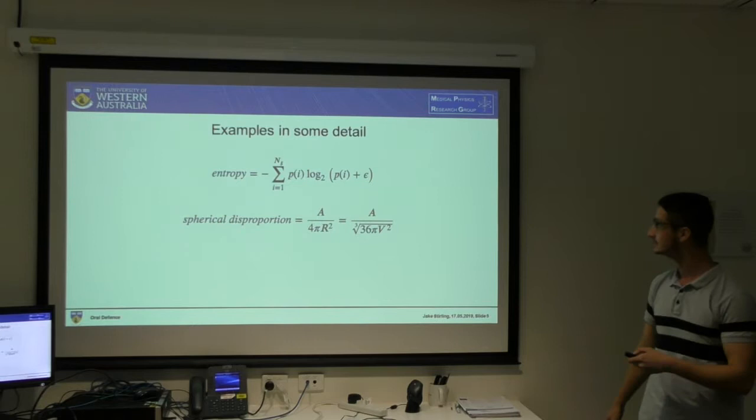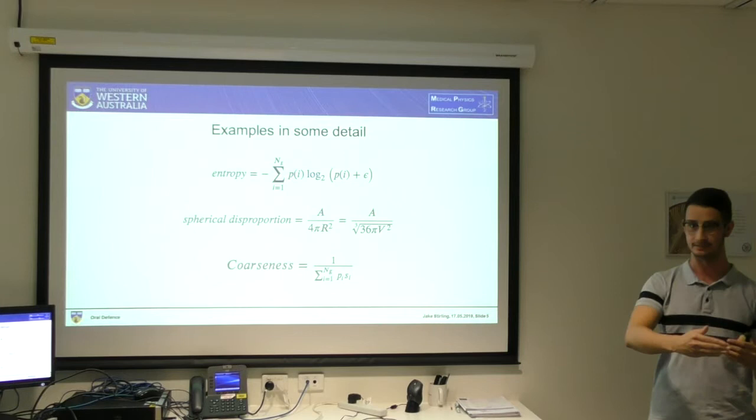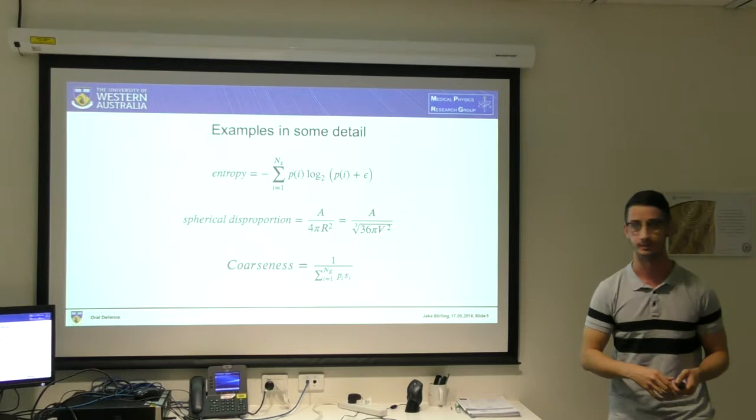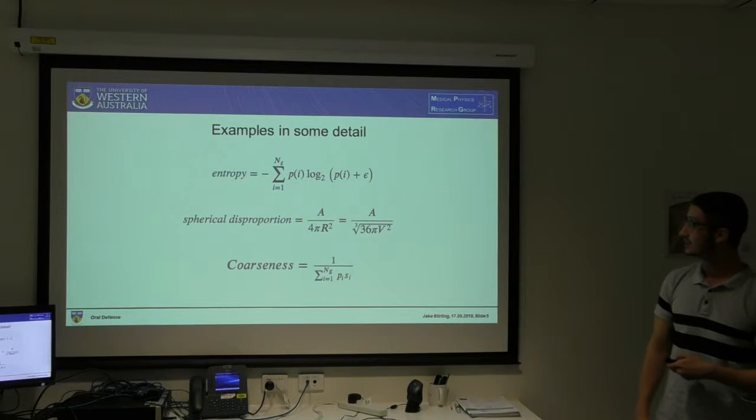Coarseness is related to how rapidly the voxel intensities change over a given distance. If this value goes up, that's associated with a more uniform tumour. S_I has a very complex definition which isn't listed here. Basically you want coarseness to be low and the other measure to be high for a better prognosis.